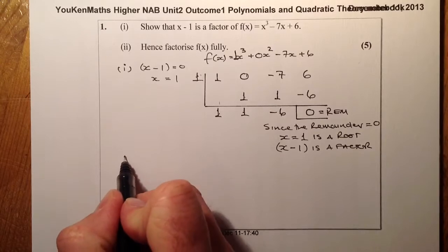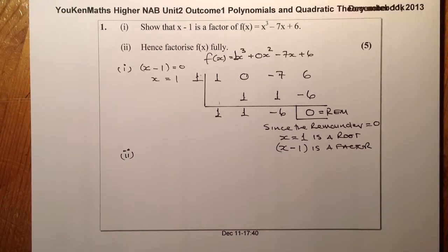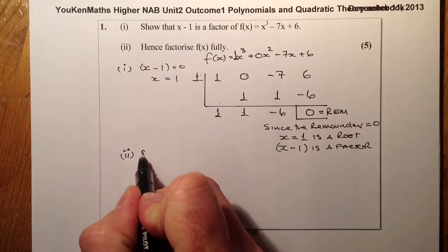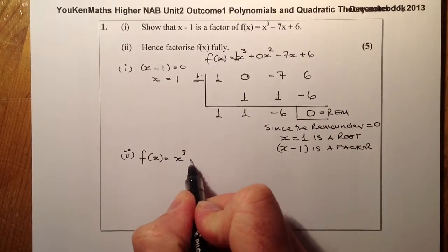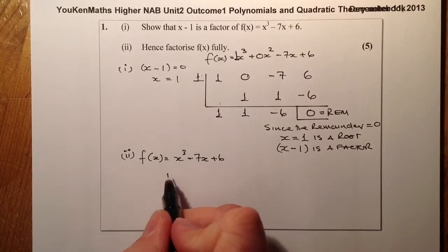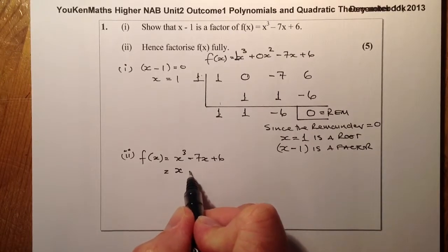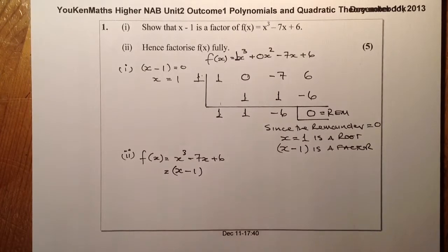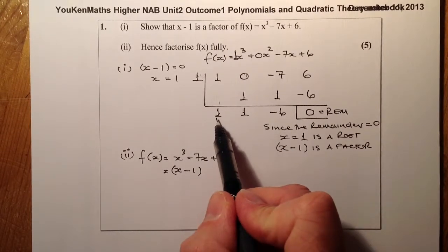And part 2, I'm asked to factorise f(x) fully. Let's write down the f(x) function first of all. That was x cubed minus 7x plus 6. What I know from that already is that I know that there is a factor. That was the first part that I had to work out. So I'll start by substituting that in there.